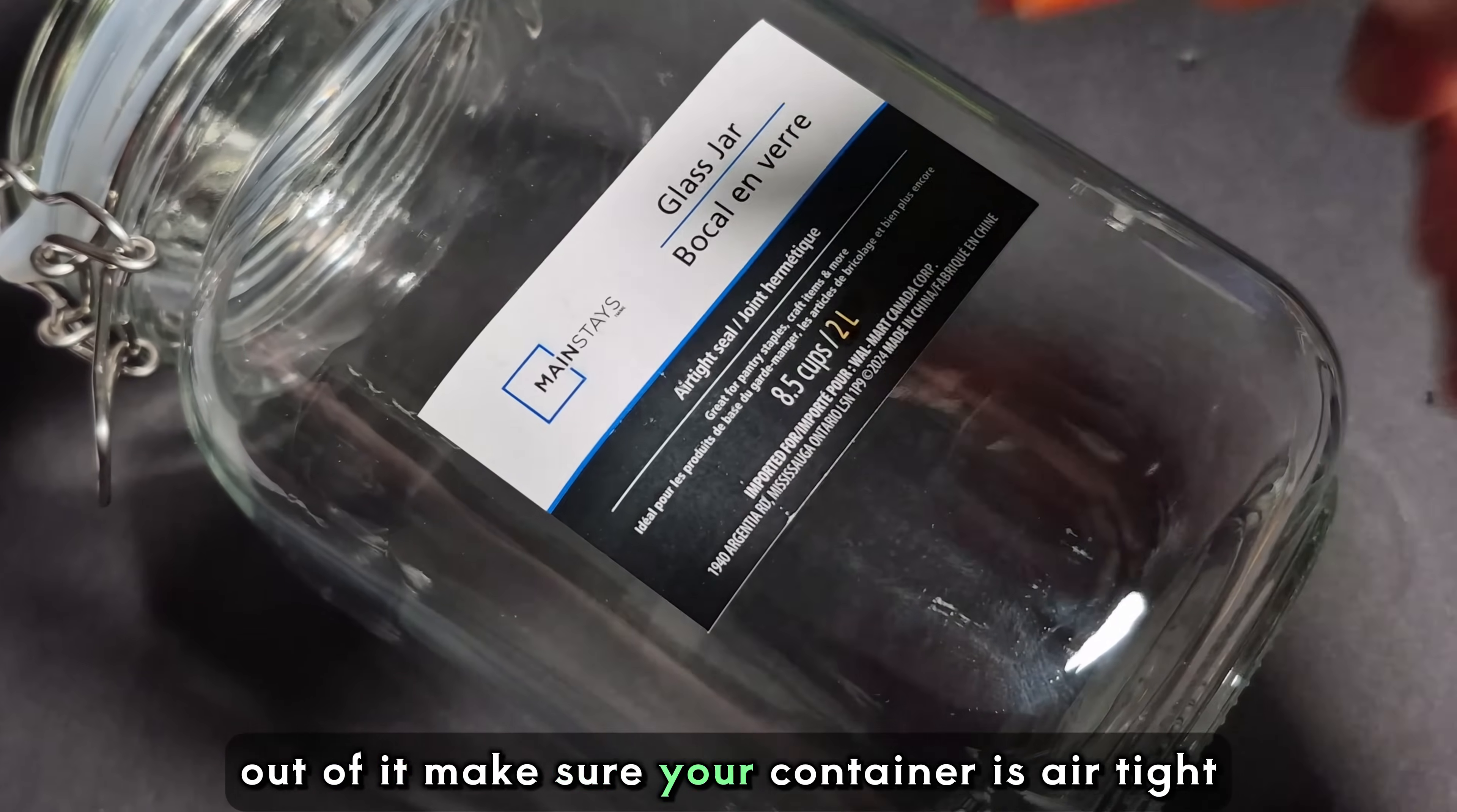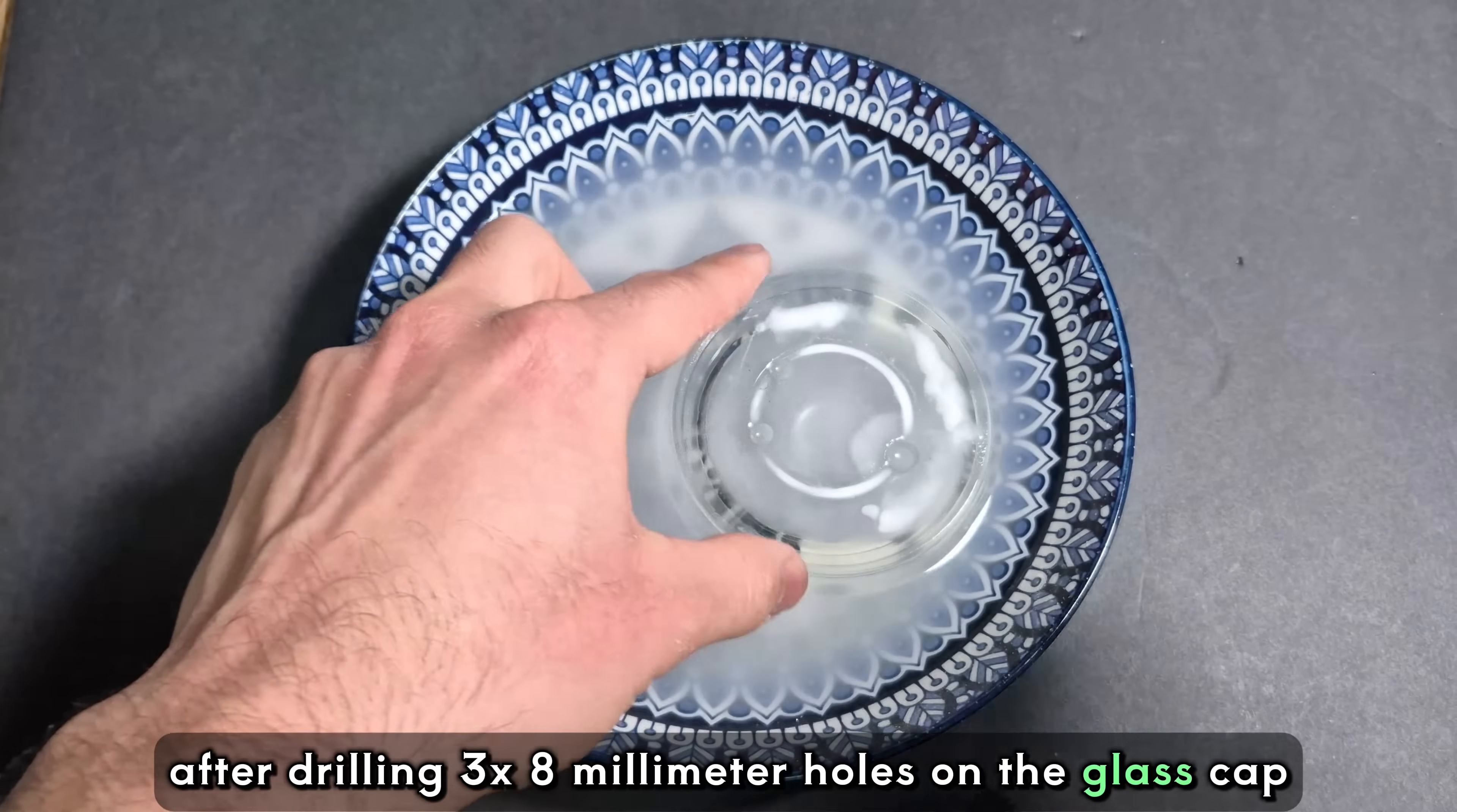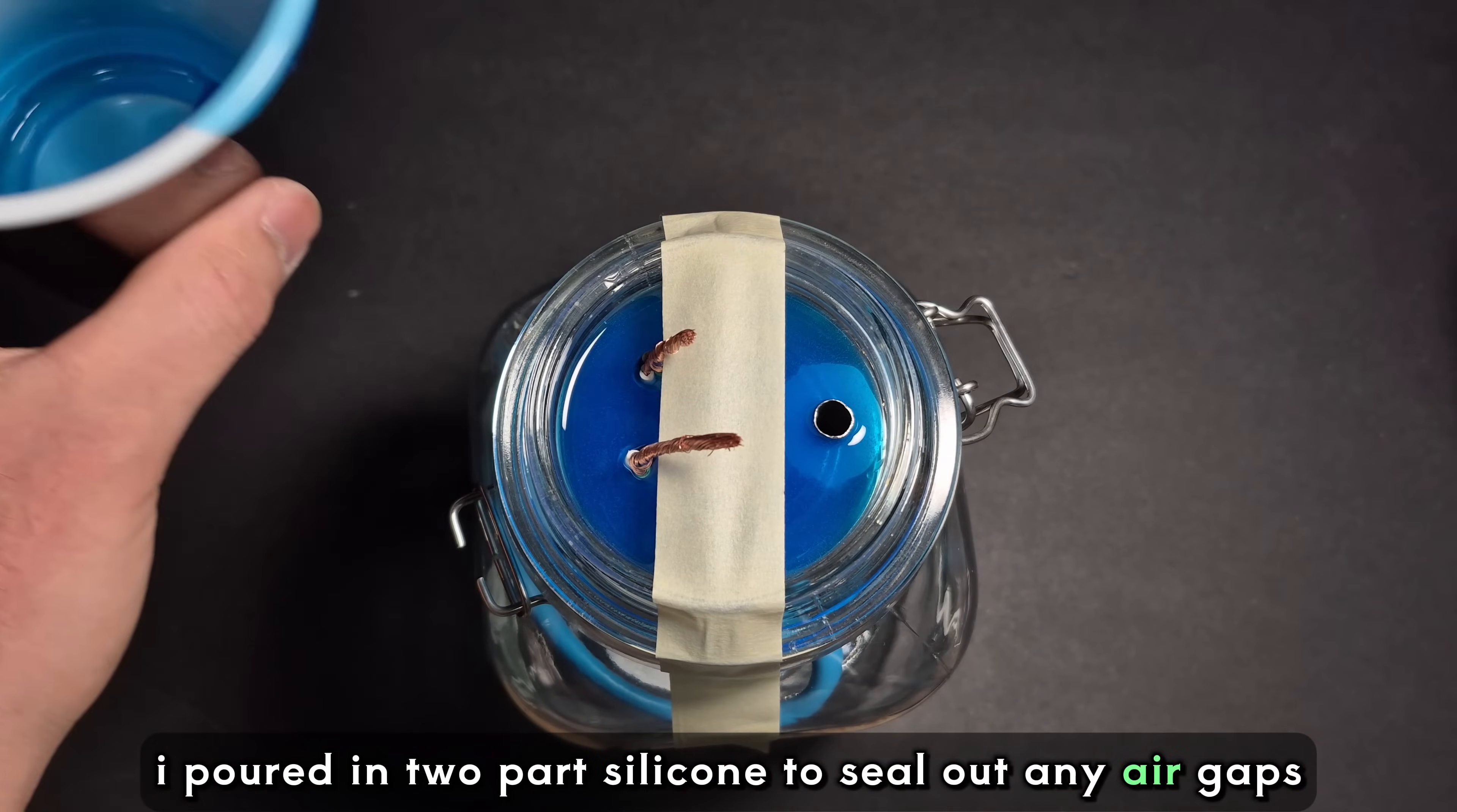Make sure your container is airtight. We do not want any gas leaking out or any air coming in. After drilling three 8-millimeter holes on the glass cap, I cut one stainless steel drinking straw and placed it on the cap. Then I secured two wires in other holes. I poured in two-part silicone to seal out any air gaps, then waited 24 hours for silicone to cure properly.